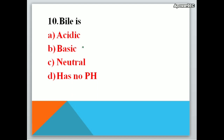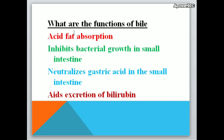Bile is — A. acidic, B. basic, C. neutral, D. has no pH. Correct answer is basic — bile is basic. Functions of bile include: aiding fat absorption, inhibiting bacterial growth in the small intestine, neutralizing gastric acid in the small intestine, and aiding excretion of bilirubin.